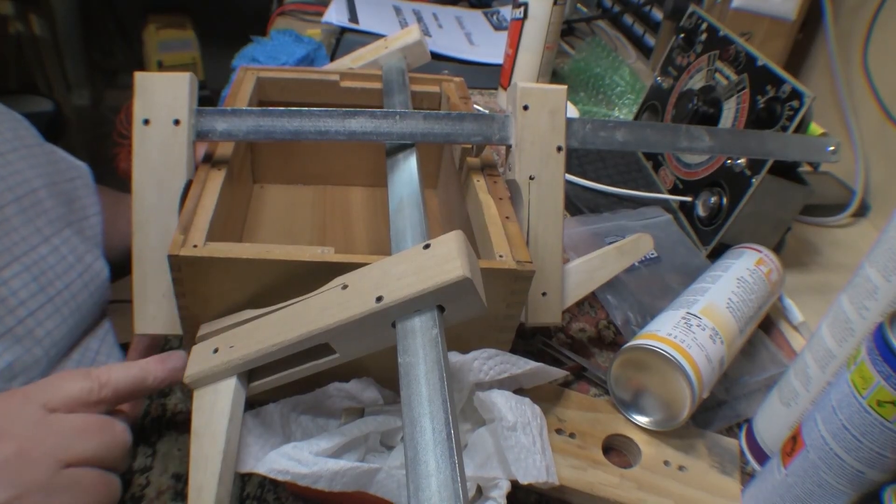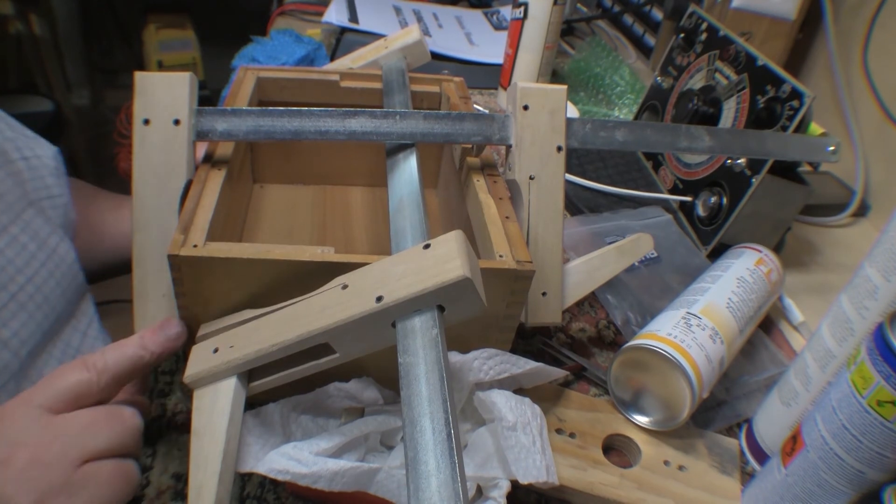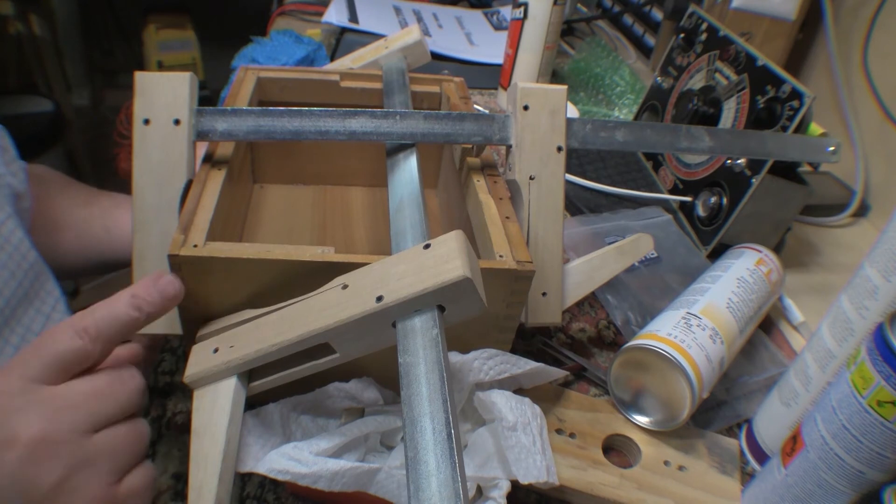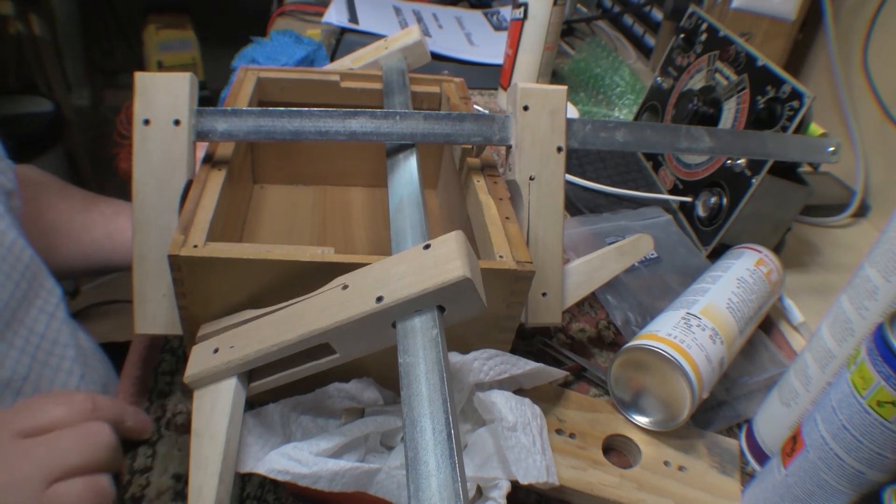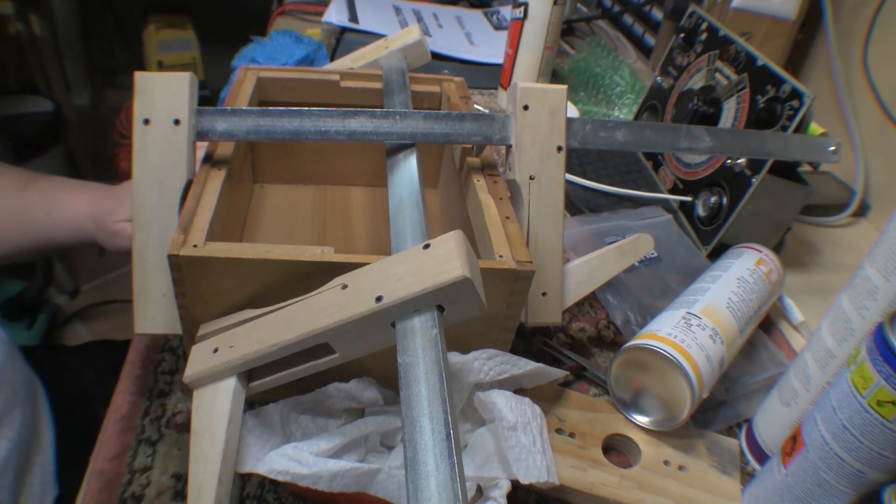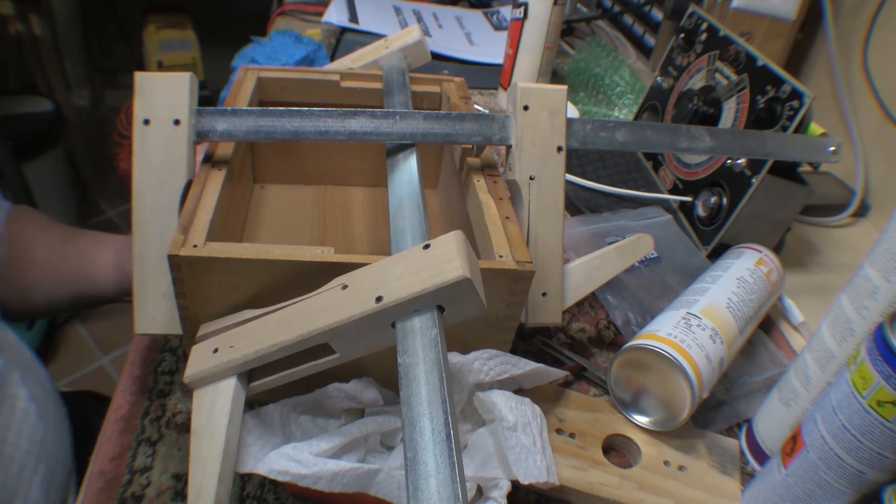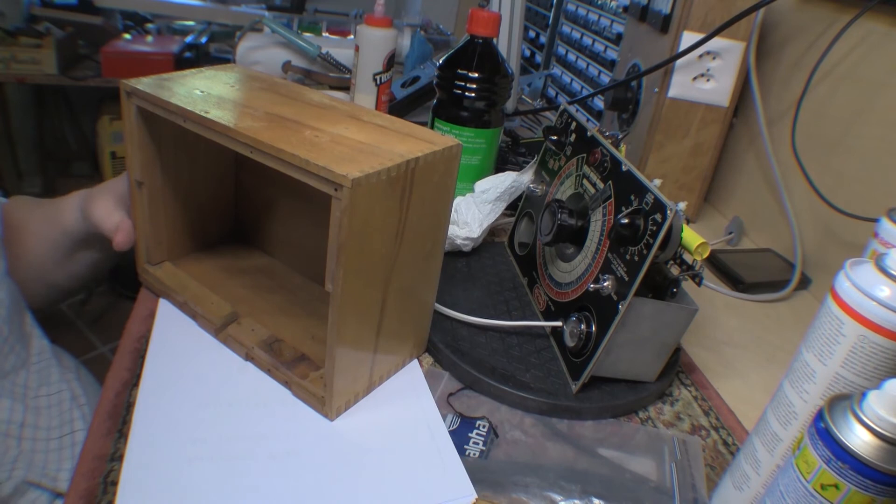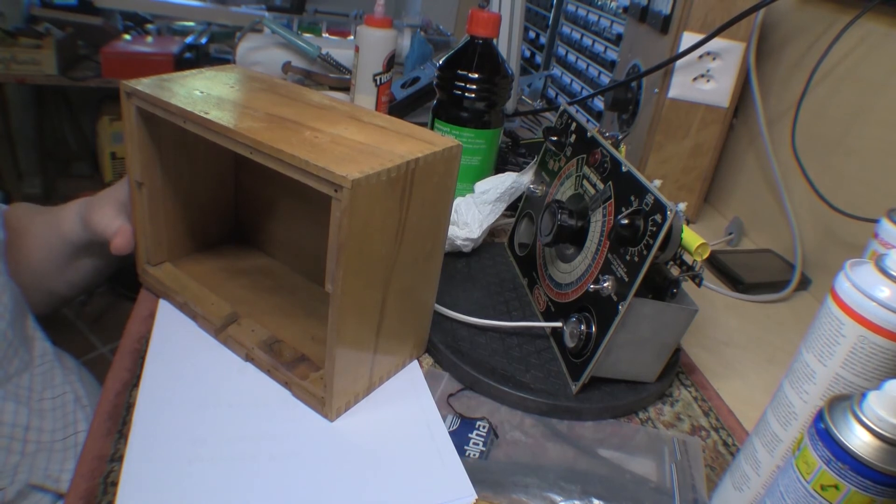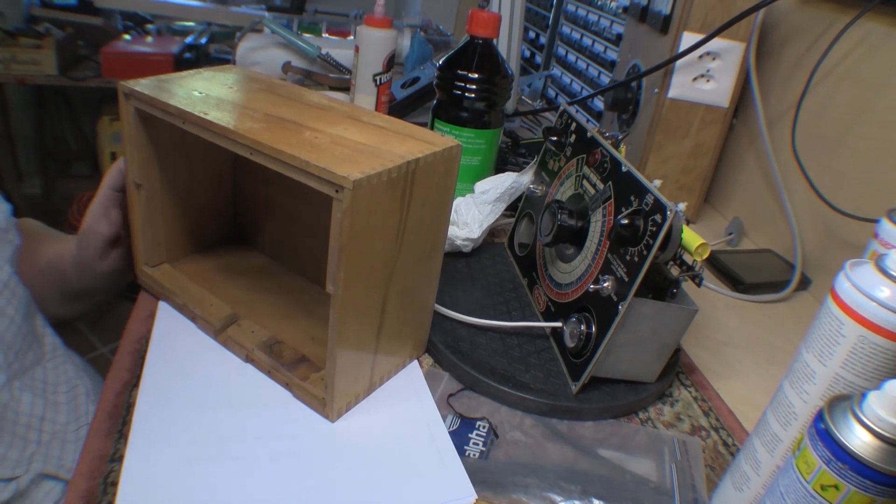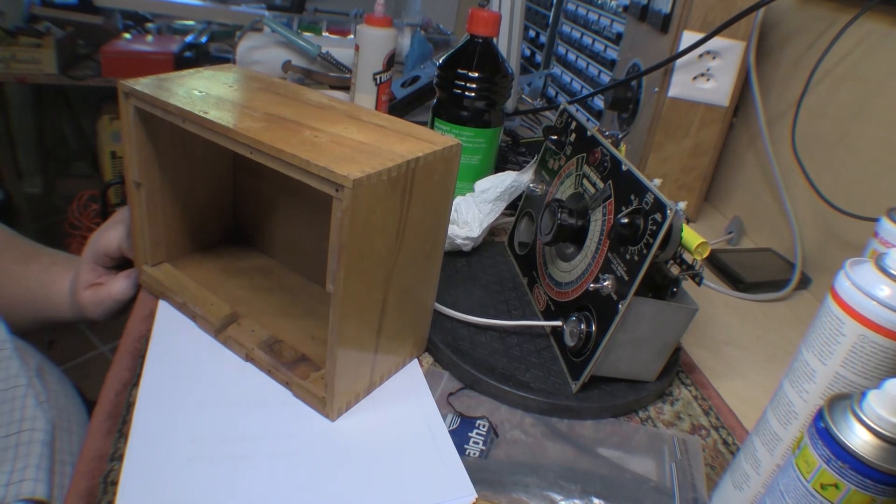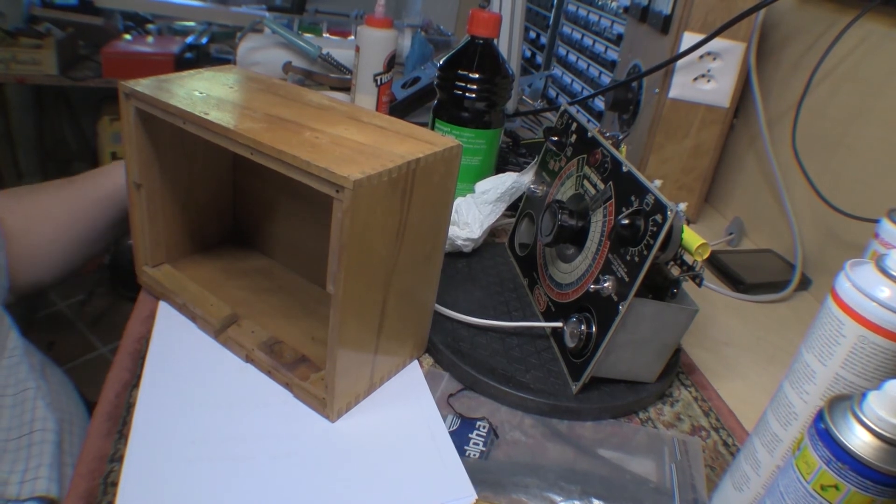So this corner down here had completely come undone. So I've glued that up and clamped it up. And we'll let that set before we go any further. Okay, so the base, the box itself is basically stable at this point. There seems to be a cut out here which is not original. So I'm not quite sure what that was put there for. It doesn't show on any of the photos I have of the device.